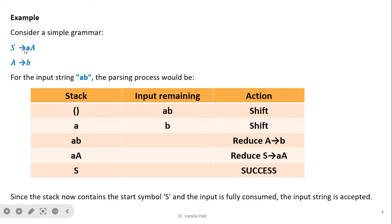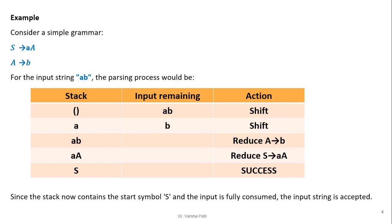Since S produces 'a A' and A can be replaced with 'b', the string 'ab' is reachable from the start symbol, so it is an acceptable string. Initially the stack is empty and the input is 'ab'. First we perform a shift operation, pushing 'a' onto the stack. The remaining symbol is 'b'. We check whether any production rule's right-hand side matches 'a' alone — it does not, so we perform another shift operation, pushing 'b' onto the stack.